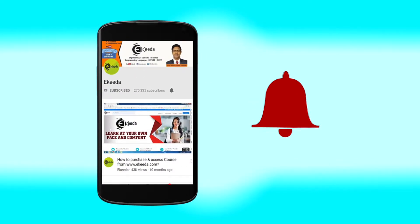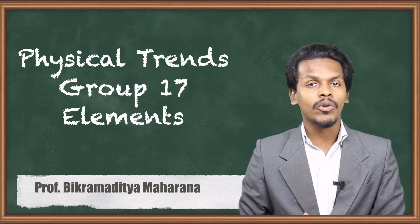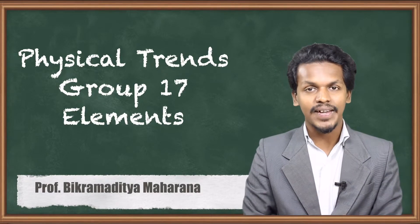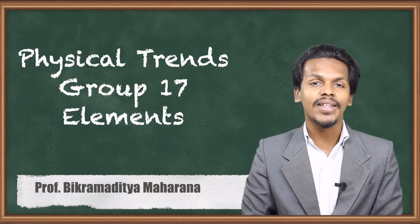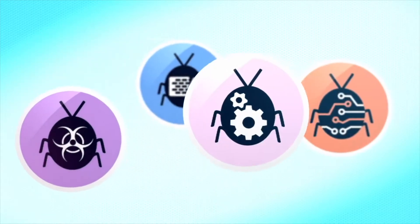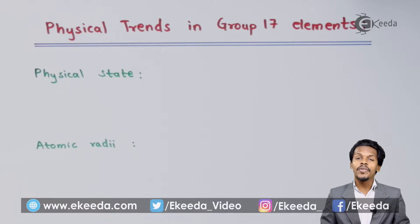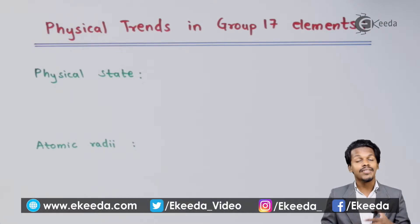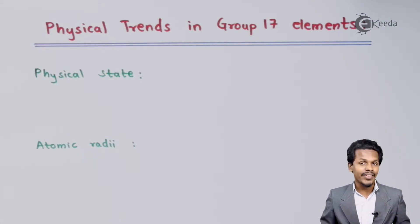In the previous lecture we discussed group 17 elements and their occurrence. Now in this topic we are going to talk about the physical trends in group 17 elements. As we have discussed physical trends for group 15 and group 16, similarly we will now discuss the physical trends observable in group 17 elements.